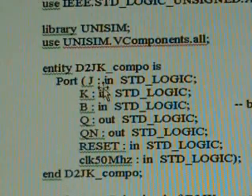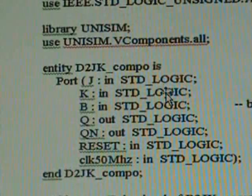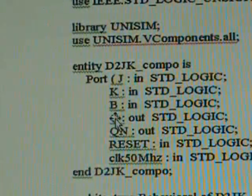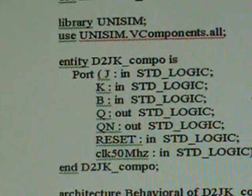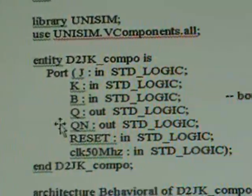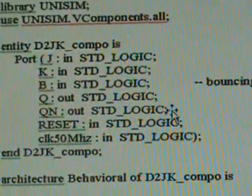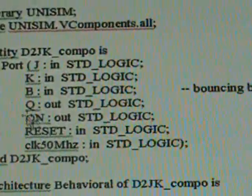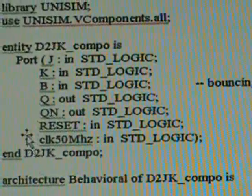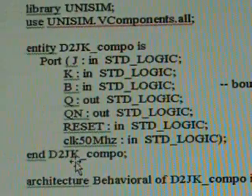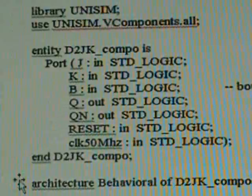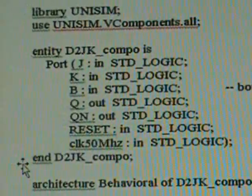The port list consists of J as an input in standard logic, K also in standard logic, B as a standard logic input for the bouncy push button, Q as the output in standard logic, QN which is the complement of Q also as output standard logic, reset as standard logic, and the system clock CLK_50MHz as input standard logic. That is the end of the entity declaration.